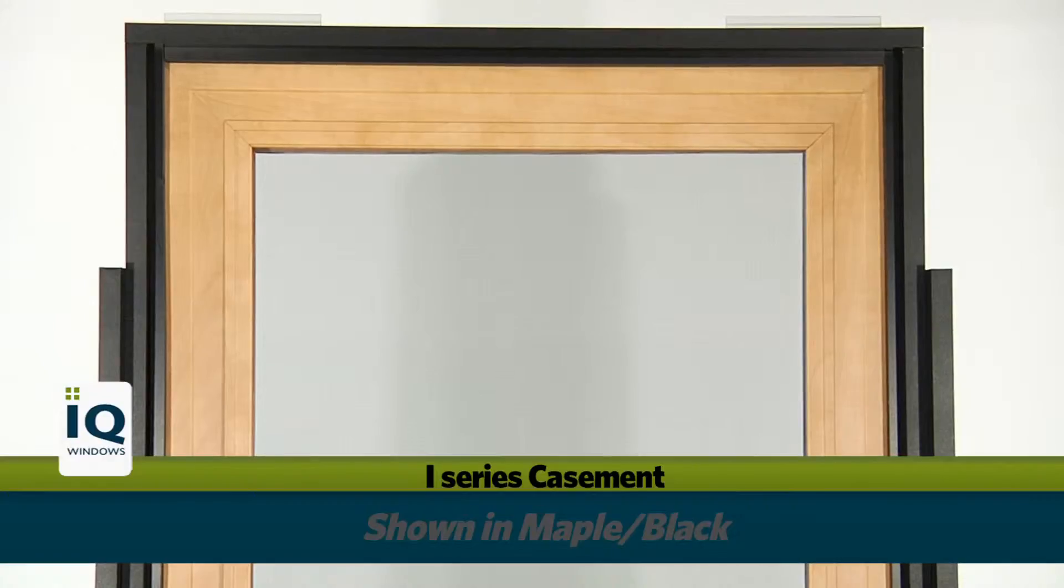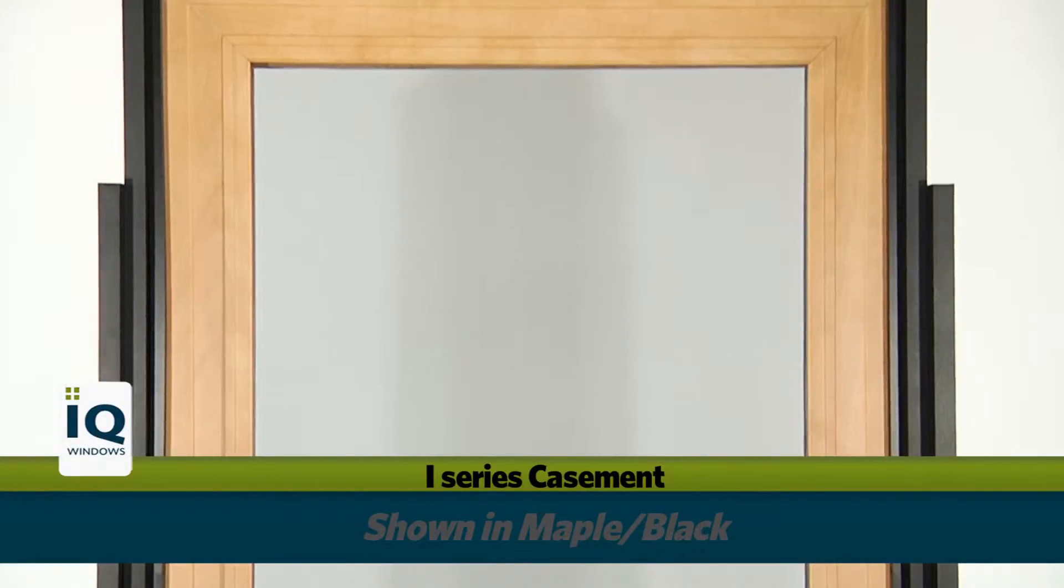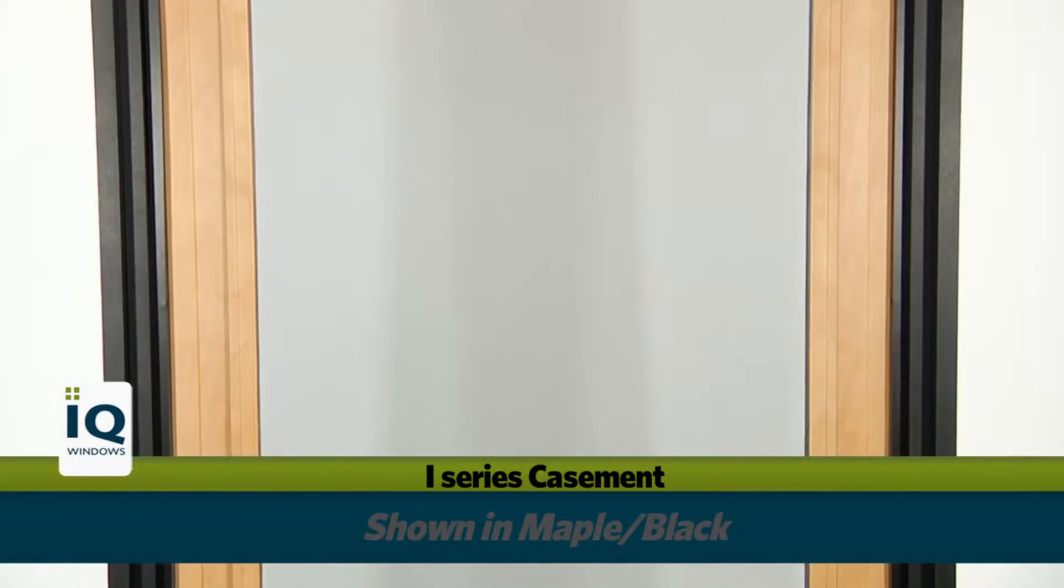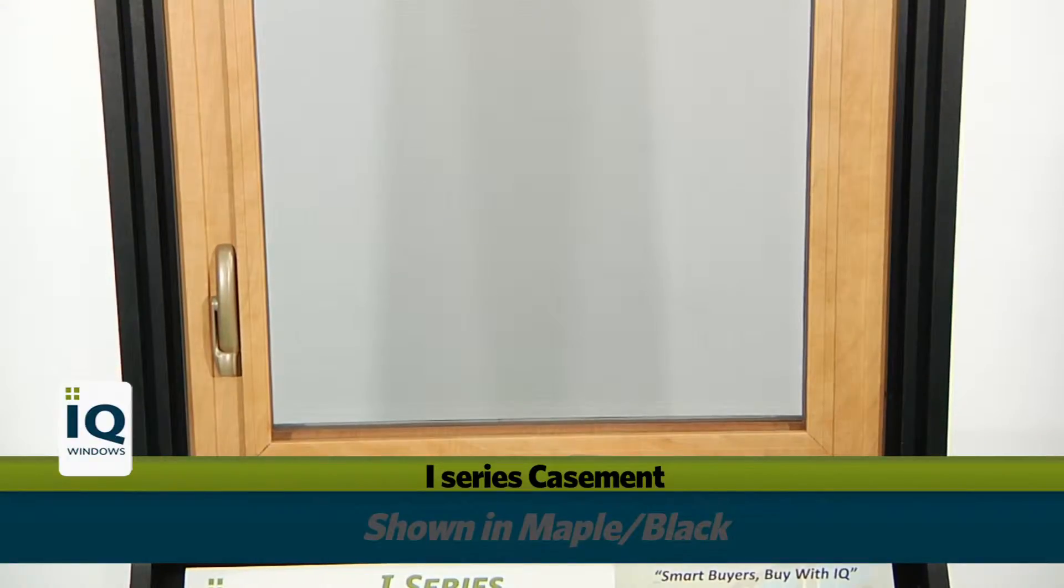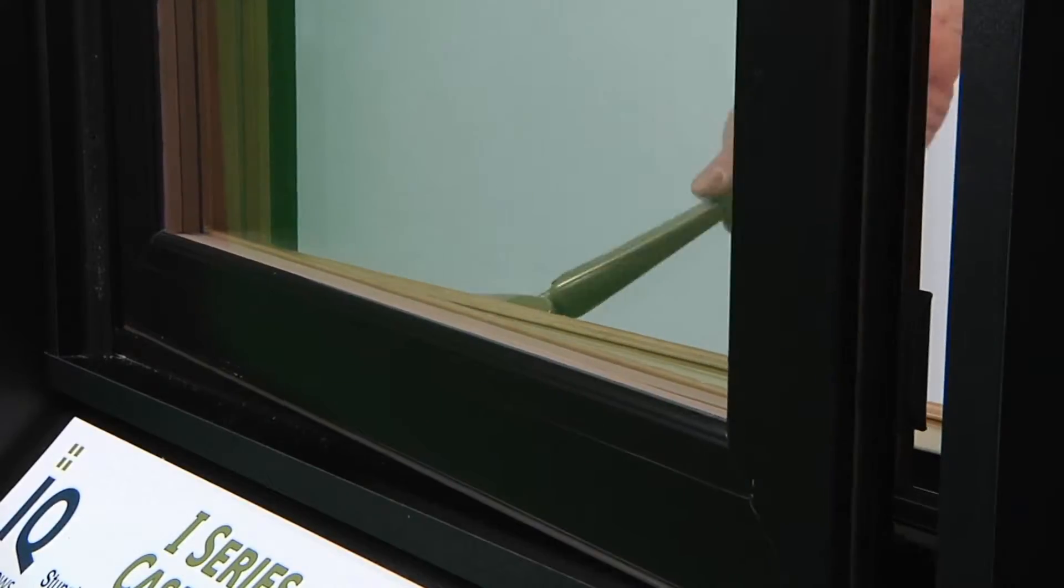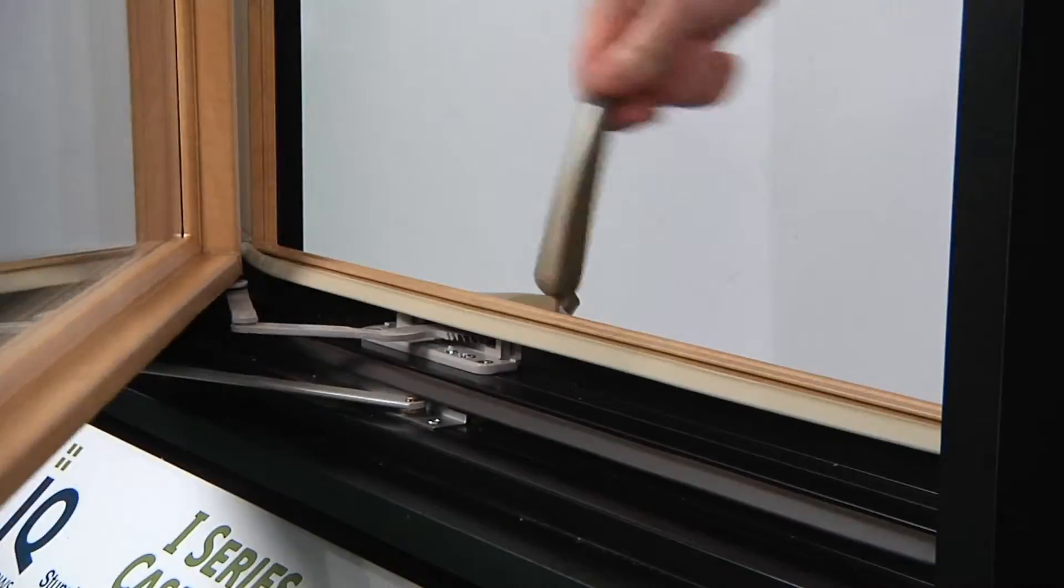Now that we have learned about our i-Series double-hung, let's look at the i-Series casement. The casement window shares the majority of the features of the other i-Series windows from IQ, but naturally they operate differently by using a crank-out design.